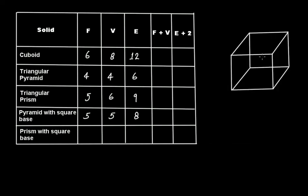The last one is a prism with a square base, which is actually a cube. Let's count the faces: front, back, top, bottom, right side, and left side — six faces. Vertices will be exactly equal to the cuboid, that is eight. Edges will also equal the cuboid: one, two, three, four at the back, five, six, seven, eight, nine, ten, eleven, and twelve.